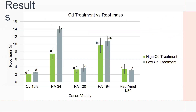For the results, we found that NA34 showed a significant reduction in root mass under high cadmium treatment conditions. For the other varieties, the cadmium treatment did not have an effect on root mass.